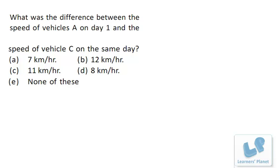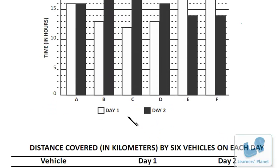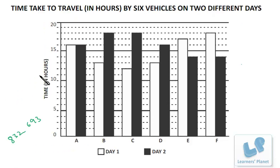Now let's take this problem: what was the difference between speed of vehicle A on day one and the speed of vehicle C on the same day? That means we have to make the comparison between the speed of vehicle A and C on day one. So on day one, A is 832 and C is 693. I write it over here: 832, 693. On day one, time taken by A is 16 hours and time taken by C is 12 hours.